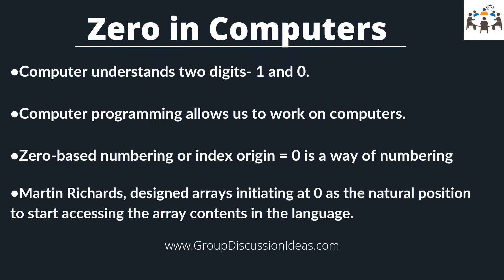Computer programming allows us to work on computers and carry out our day-to-day jobs efficiently. Zero-based numbering, or index origin equal to zero, is a way of numbering in which the initial element of a sequence is assigned the index zero rather than the index one, as is typical in everyday non-mathematical or non-programming circumstances. Do you know Martin Richards, creator of the BCPL language, a precursor of C, designed arrays initiating at zero as the natural position to start accessing array contents in the language?